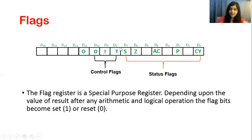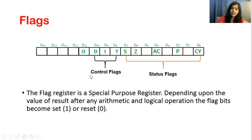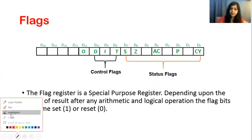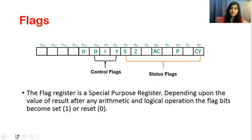In this 16-bit flag register, 5 bits are used as status flags: carry flag, parity flag, auxiliary carry flag, zero flag, and sign flag. And 3 bits — trap flag, interrupt flag, and direction flag — are control flags. Status flags show us the status after arithmetic and logical operations, while control flags must be set or reset by the user. The flag register is a special purpose register, and depending on the value of the result after arithmetic and logical operation, the flag bits are set or reset.